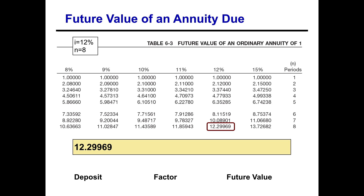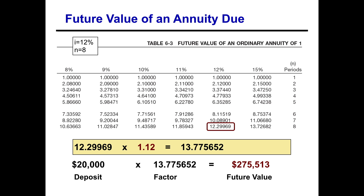Because this is the future value of an ordinary annuity table and we're solving an annuity due problem, we multiply that factor by one plus the interest rate — that is, 112% of the factor — giving us 13.775652. That's our new factor for the annuity due. We multiply that by the $20,000 annual deposit, and we find that at the end of eight periods we'll have $275,513.